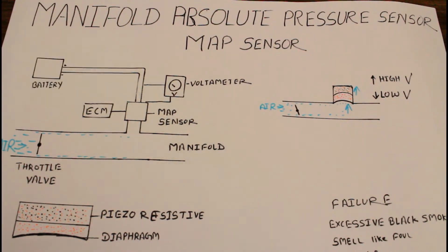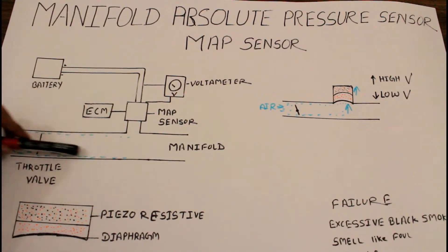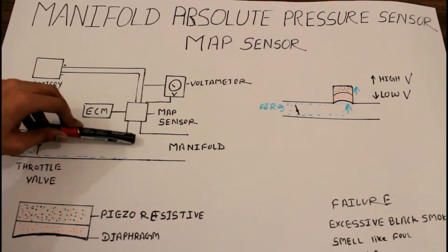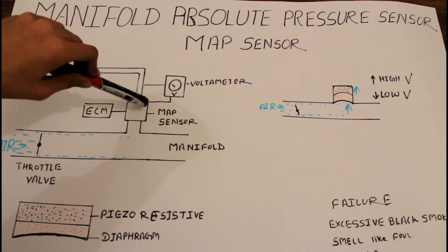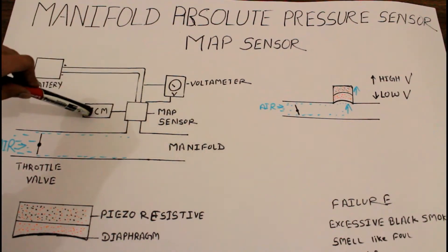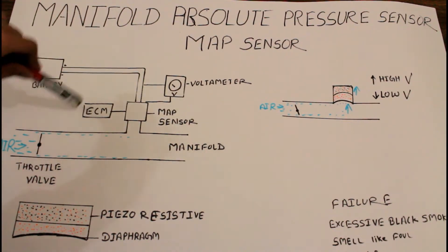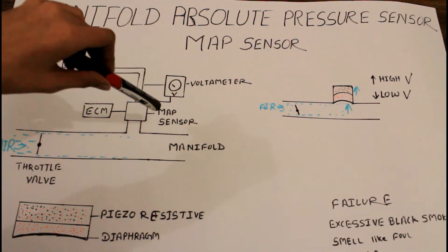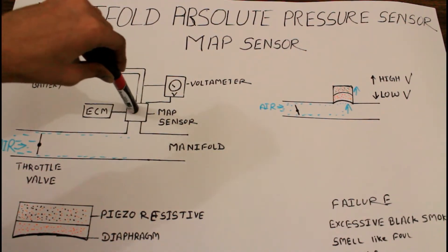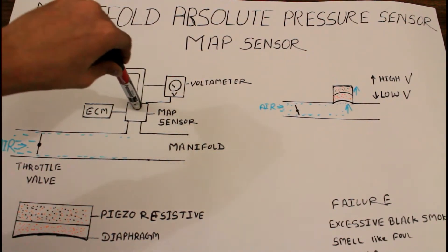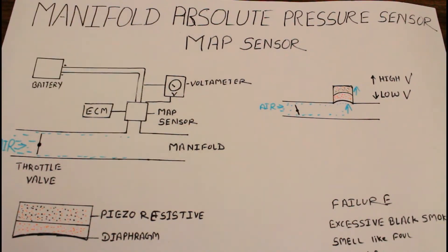Whenever air enters this pipeline and passes through the MAP sensor, it sends data about the amount of air to the ECM. The ECM then calculates based on the data sent by the MAP sensor. But how does this MAP sensor actually work? Let's have a look at the construction.